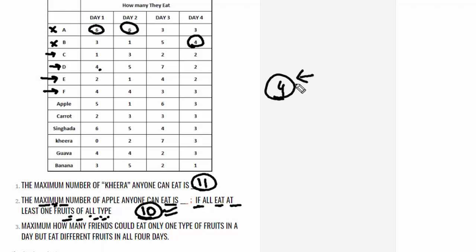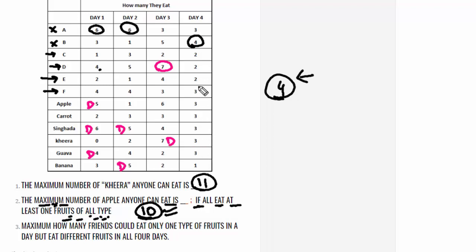If there is any contradiction, the answer should be less than 4. Now checking contradictions: D on day 3 has to eat kheera only, and no one else would eat kheera on day 3 — that is fixed. On day 1, D has either apple, singhara, or guava as options. On day 2 with 5 fruits, D has two options. D on day 4 can eat anything except banana, so no problem there.